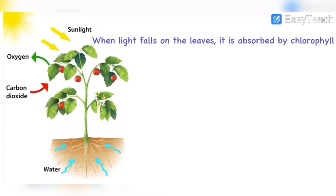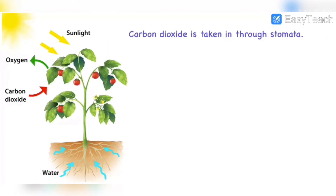Carbon dioxide is taken in through the stomata. So the stomata take in carbon dioxide, and once that ingredient is in, the food preparation begins. After the food is prepared, oxygen is given out through the stomata. So the stomata have two functions: to take in carbon dioxide and to release oxygen.